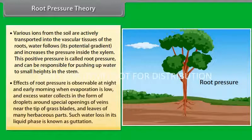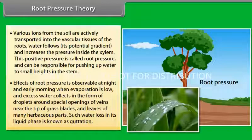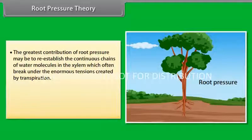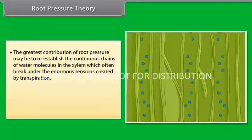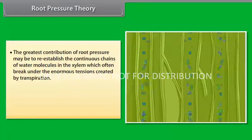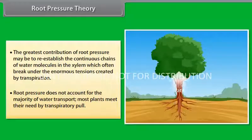Effects of root pressure is observable at night and early morning when evaporation is low and excess water collects in the form of droplets around special openings of veins near the tip of grass blades and leaves of many herbaceous parts. Such water loss in its liquid phase is known as guttation. The greatest contribution of root pressure may be to re-establish the continuous chains of water molecules in the xylem which often break under the enormous tensions created by transpiration. Root pressure does not account for the majority of water transport. Most plants meet their need by transpiratory pull.